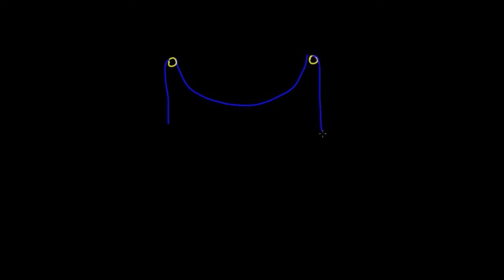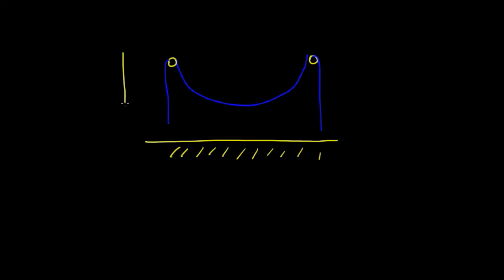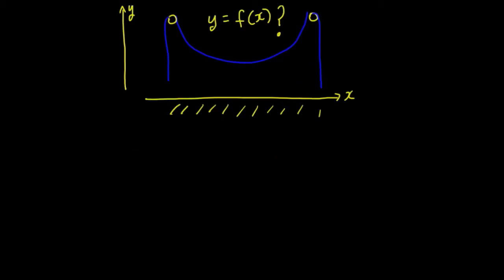Let's imagine we have a rope hanging over a couple of pulleys and we look at the ground and draw in a coordinate system. Let that be our y-axis and let that be our x-axis. Then we ask the question: what is the function which defines the shape of the curve that the rope makes?